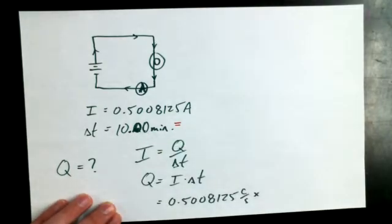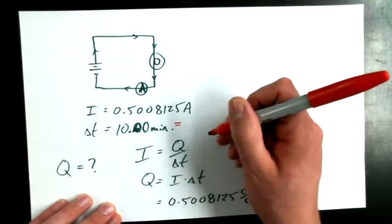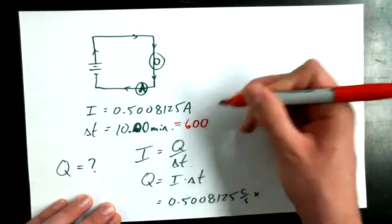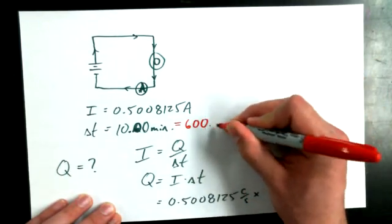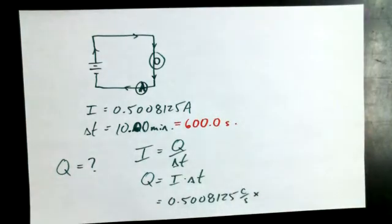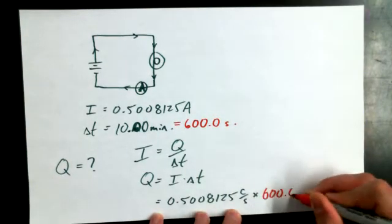How do I get minutes into seconds? So 10 minutes times 60 seconds per minute — the minutes cancel out, and I'm left with 600 seconds.